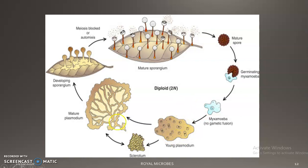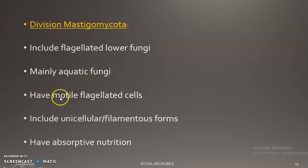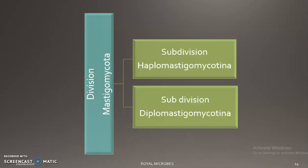The life cycle of Physarum polycephalum shows different stages, including the mature plasmodium stage. Division Mastigomycota is the second division; it includes mainly flagellated fungi — mainly aquatic fungi having flagellated cells. They include unicellular or filamentous forms and have an absorptive mode of nutrition.